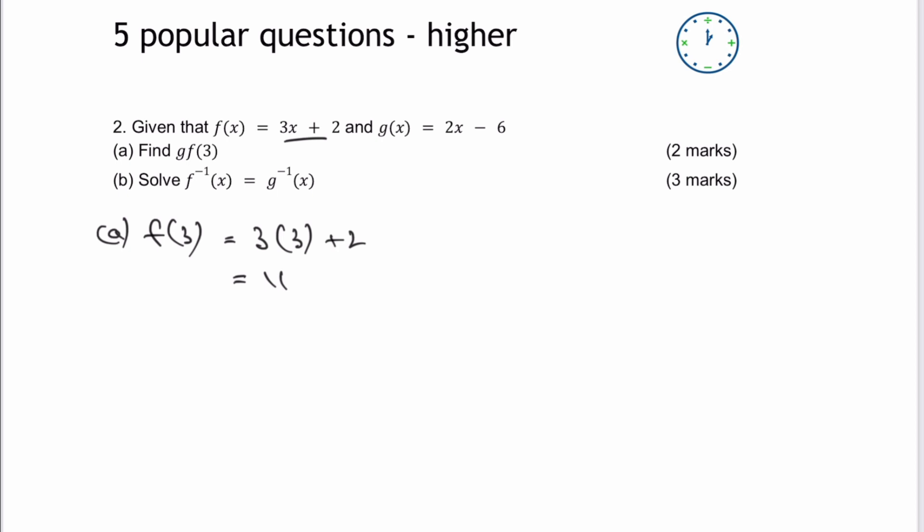Now we are being asked for the GF of three. So therefore, we're working backwards. We've now got the function of three. And what we're going to do is to take it and put that value of 11 directly into the G function. So therefore, the GF of three is going to equal to two multiplied by 11 minus six. We've taken this value of 11 and we've put it directly into the G function, which is at the top of the screen there. And that will give us then a final answer of 16.